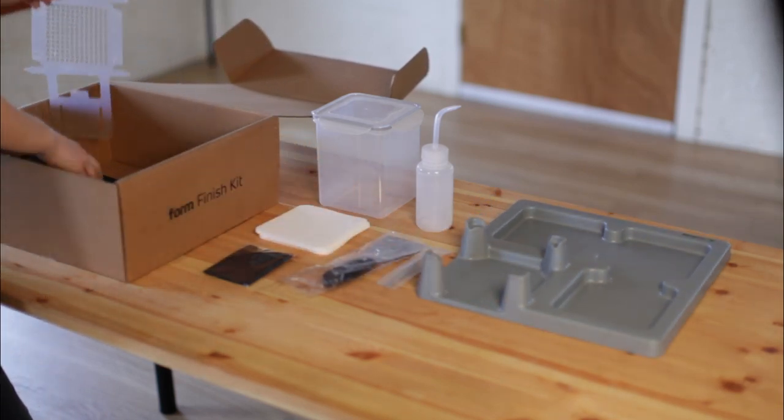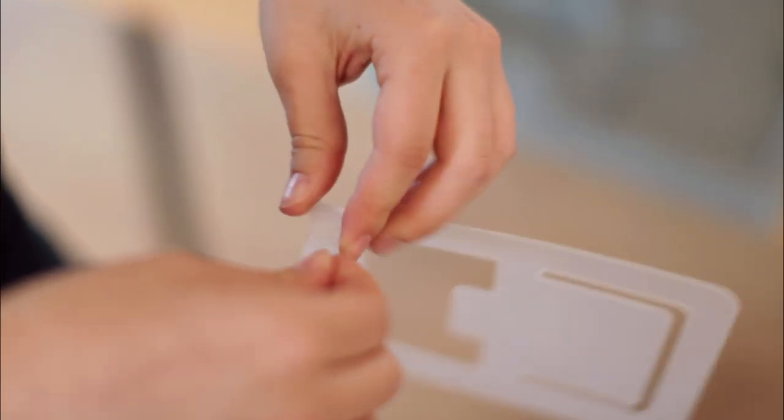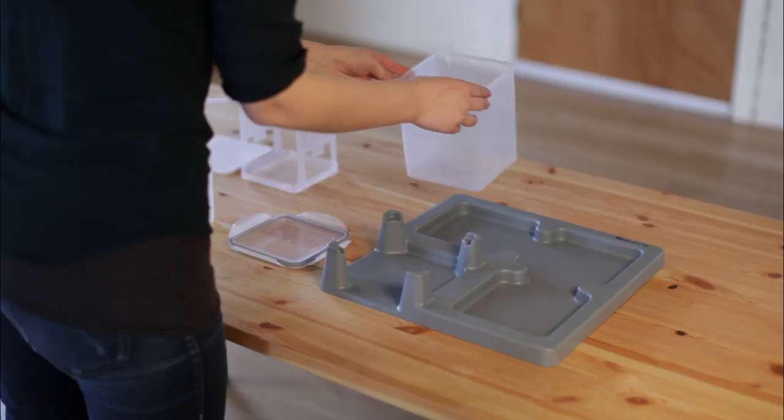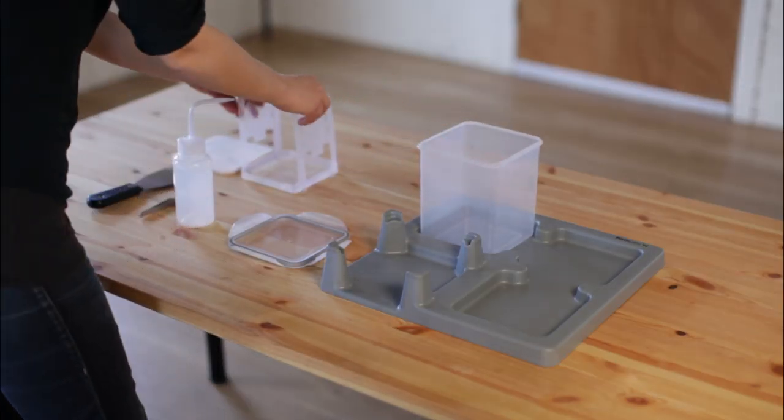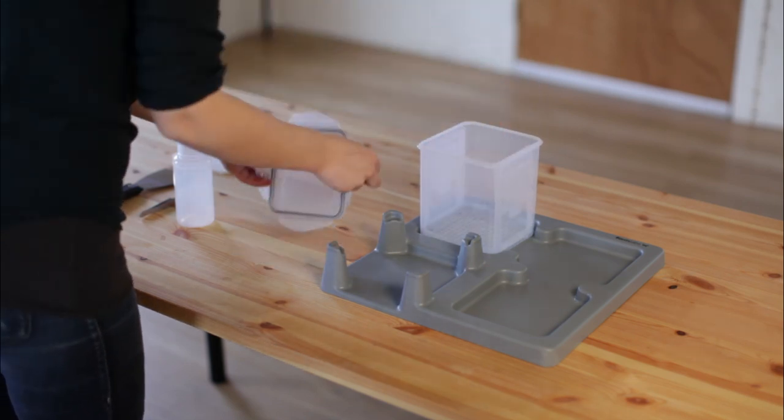Next, fold the rinse basket. Bend all the edges and fold the tabs into the slots from the outside. Place the rinse tub in one of the spots on the tray and the assembled rinse basket in the rinse tub.